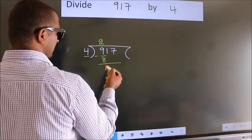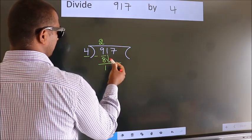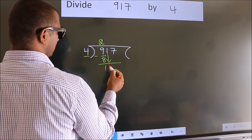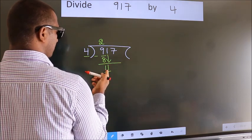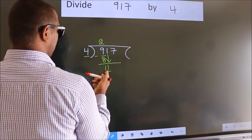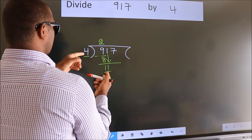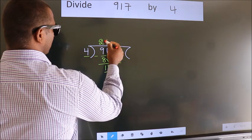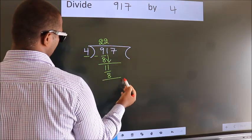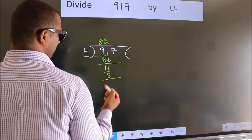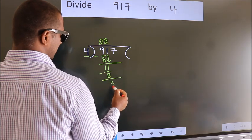After this, bring down the beside number, so 1 down, so 11. A number close to 11 in the 4 times table is 4 twos are 8. Now we subtract, we get 3.